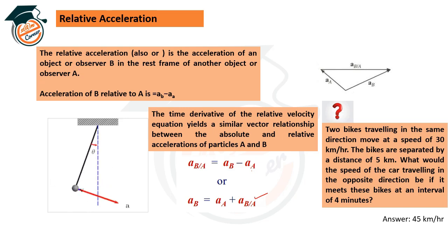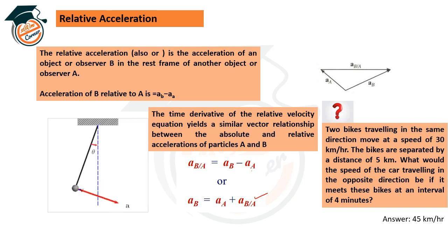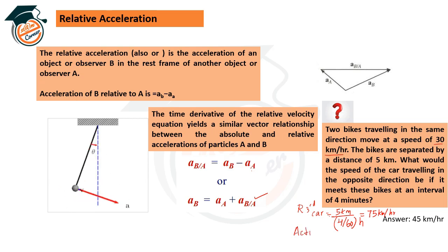Problem: Two bikes are travelling at the same speed of 30 km/h and are separated by a distance. A third bike covers the gap in 4 minutes. Since the two bikes move in the same direction at the same speed, their relative velocity is zero. The relative velocity of the third bike equals 5 km ÷ (4/60 hours) = 75 km/h. So the actual velocity of the third bike equals 75 − 30 = 45 km/h.